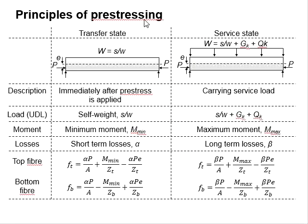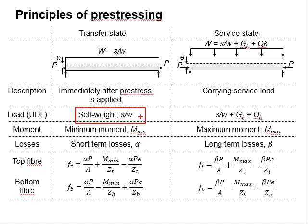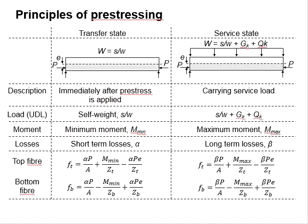This slide compares the transfer stage and the service stage. The transfer stage refers to the beam immediately after the pre-stress is applied, before it carries any load. In this case, only self-weight acts on the beam, so the moment generated by the self-weight is considered a minimum moment. The losses during the transfer stage are considered short-term losses, represented by the factor alpha.